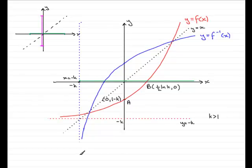So, there's our domain. Our domain then, for the inverse function of x, is basically that x is any value greater than minus k.